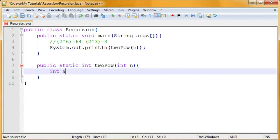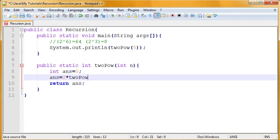So, int ans is going to be our variable that we're going to return. So, return ans. And then we're going to set ans equal to two times two pow of n minus one. Okay.